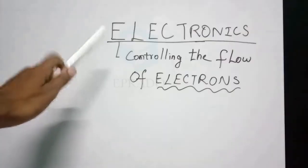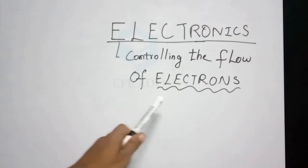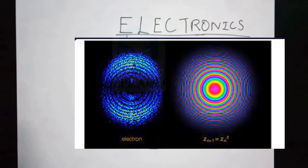Electronics means controlling the flow of electrons. Then what is an electron? Let us see. Electrons are the tiny particles present in the atom. So what is an atom?